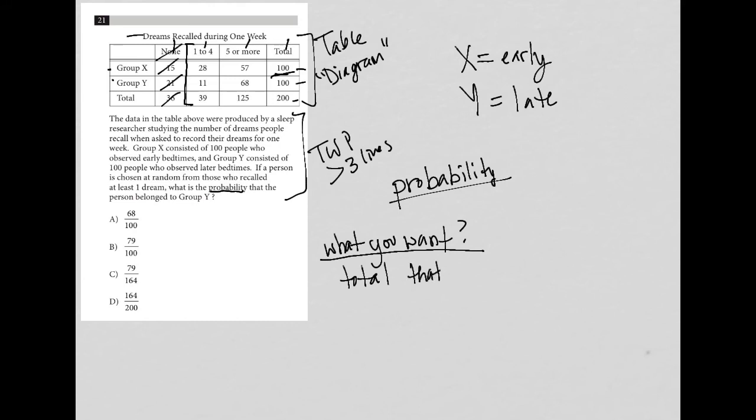So to be very clear, total that you're choosing from. What is it that we want? The question says that we want a person chosen who at least has one dream but that they belonged to group Y.